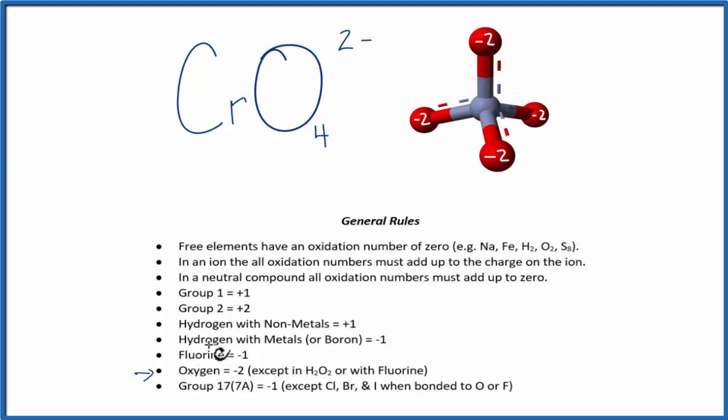And while we don't see the chromate here, we do have a rule that says in an ion, all of the oxidation numbers must add up to the charge on the ion.